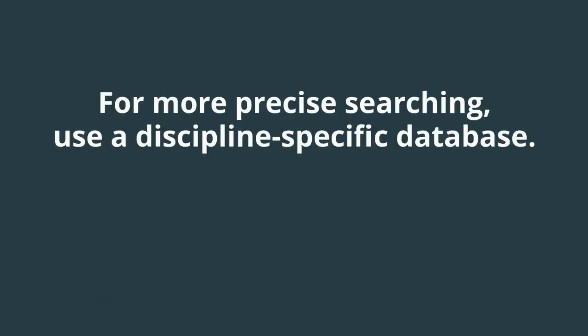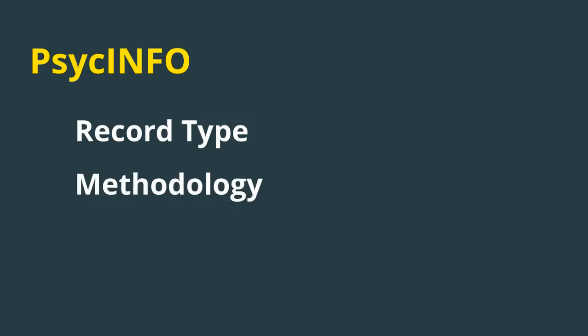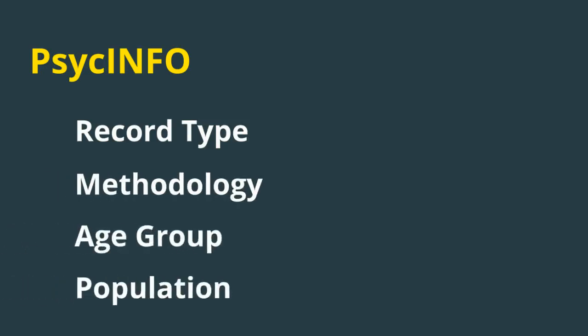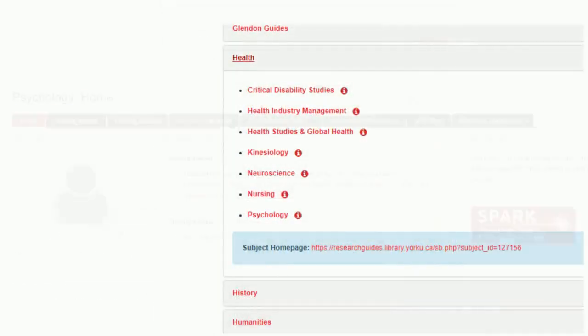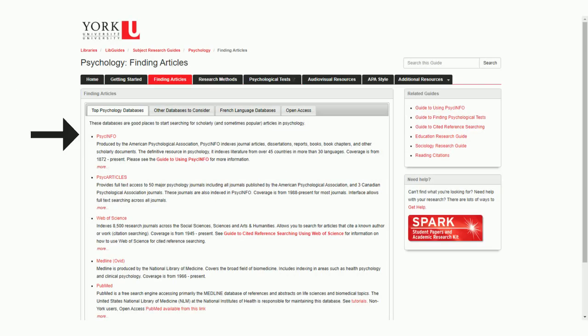Omni is an excellent place to start research on your complex topic. If you want to refine your search strategy and limit results to only psychology publications, you can search the psychology database PsycInfo. In PsycInfo, you can use discipline-specific limits such as record type, methodology, age group, and population, as well as the built-in thesaurus for psychology terms, giving you more focused and relevant results. To find and access PsycInfo, start from the library website, click on Research Guides, choose Psychology, then Finding Articles, and follow the link for PsycInfo.